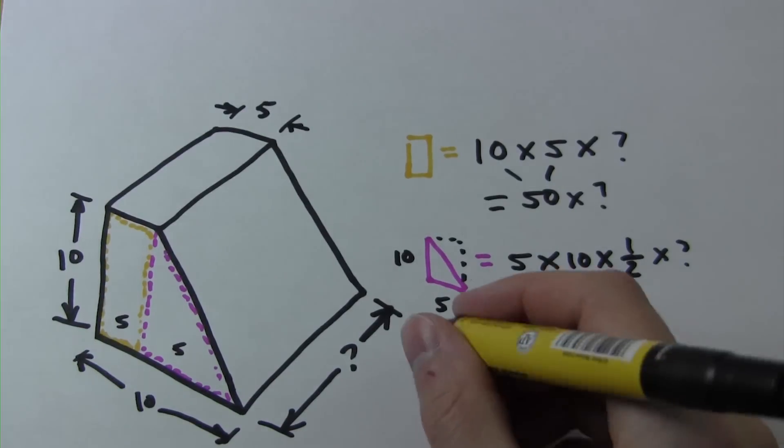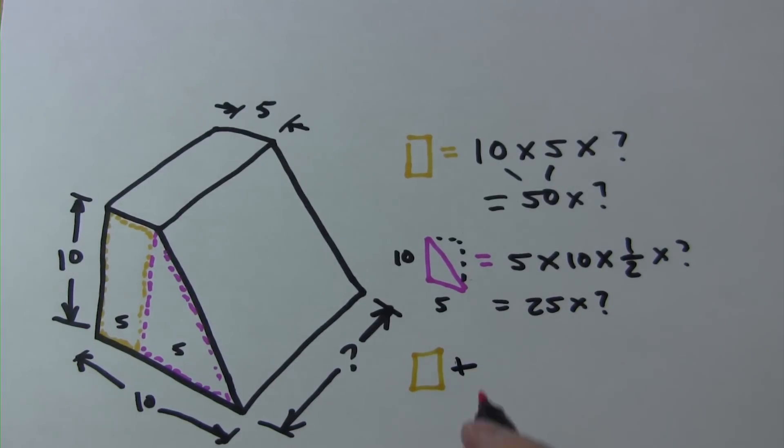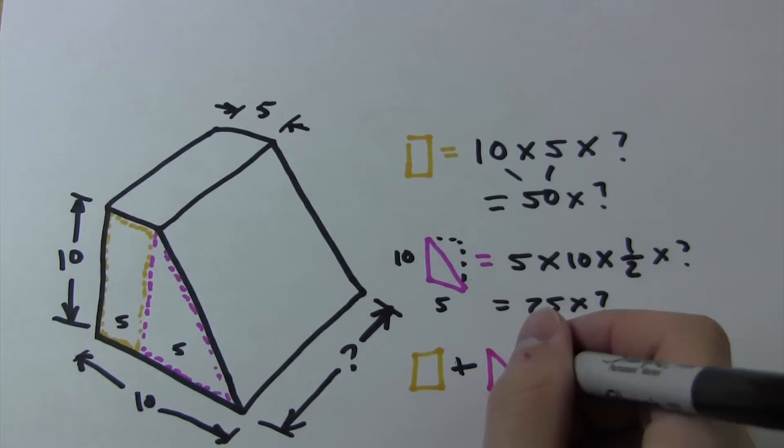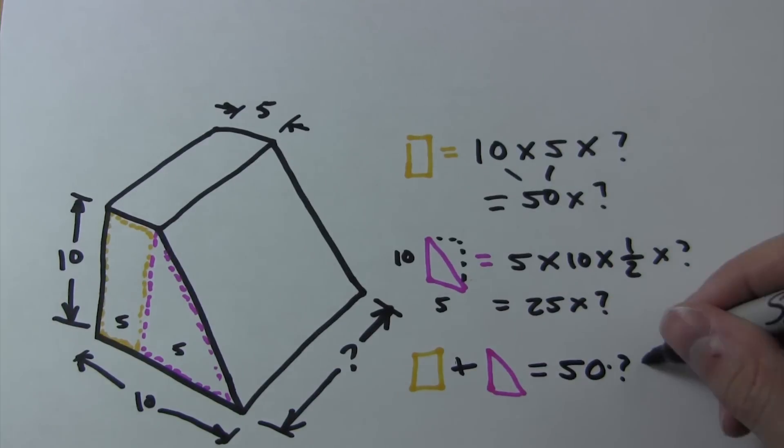To find the total volume, we simply add the rectangular section and the triangular section. So we have 50 times the variable plus 25 times the variable, which is 75 times the variable.